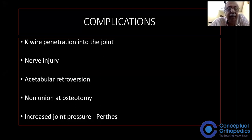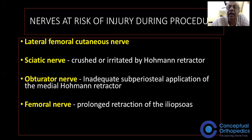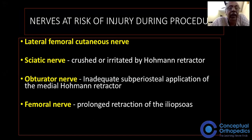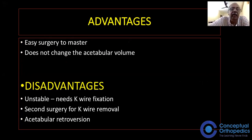Non-union at the osteotomy is very rare, and increased joint pressure can occur when the procedure is done for Perthes disease. The lateral femoral cutaneous nerve can be injured. The sciatic nerve can be crushed by the Hohmann retractor placed into the greater sciatic notch, the obturator nerve during retraction, and the femoral nerve during retraction of the iliopsoas.